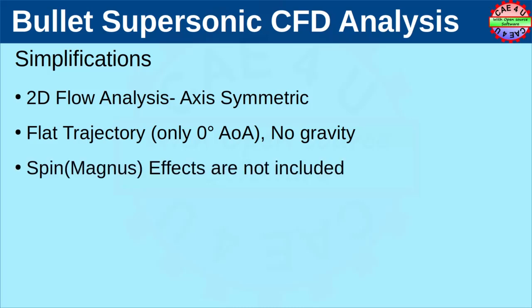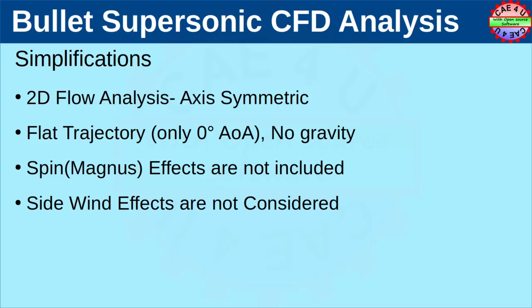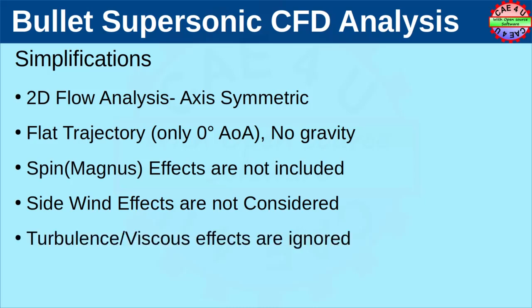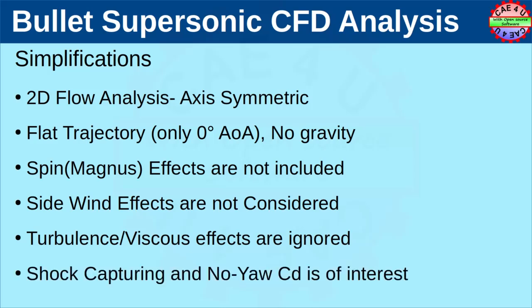Most bullets are spin stabilized, meaning a spin motion is induced when the bullet gets fired. However, in this analysis the spin effect is not included. The simulation will not allow side wind effects because that would require a full 3D angle of attack simulation. Turbulence effects are neglected and it is considered that the flow is laminar and inviscid. This simulation is more suitable for shock capturing, and the so-called no-yaw CD — the drag coefficient — is of interest.